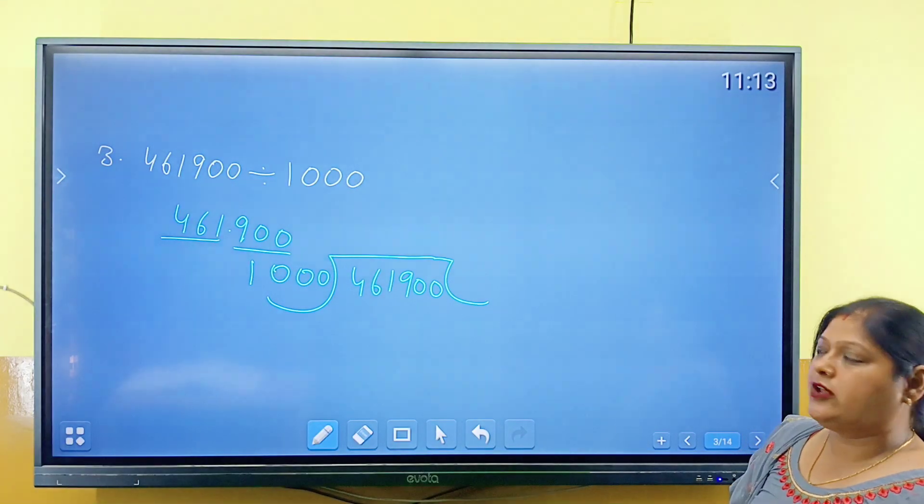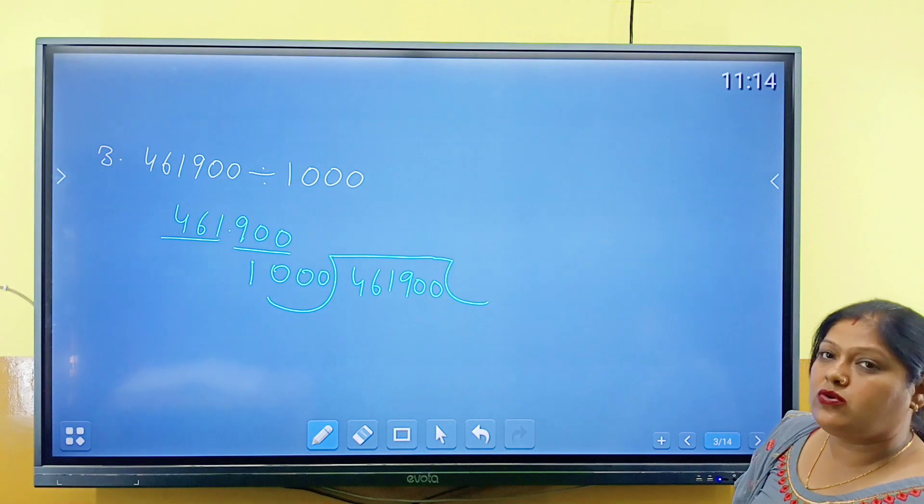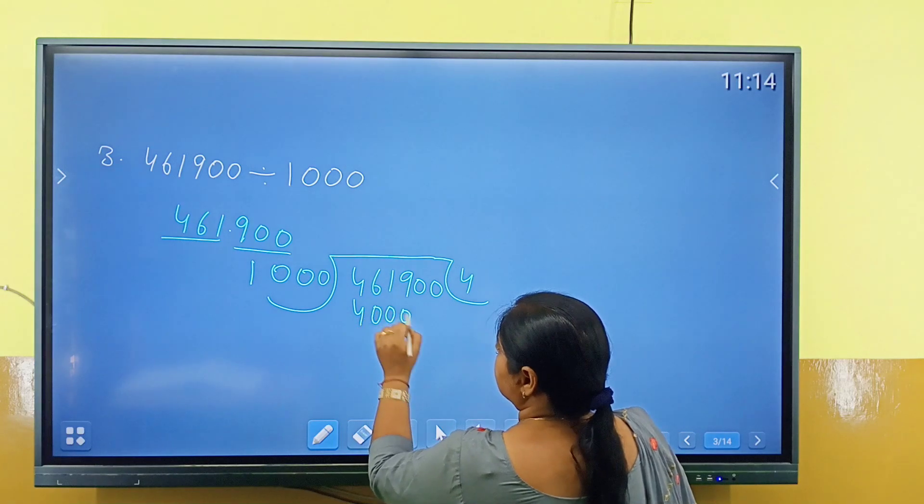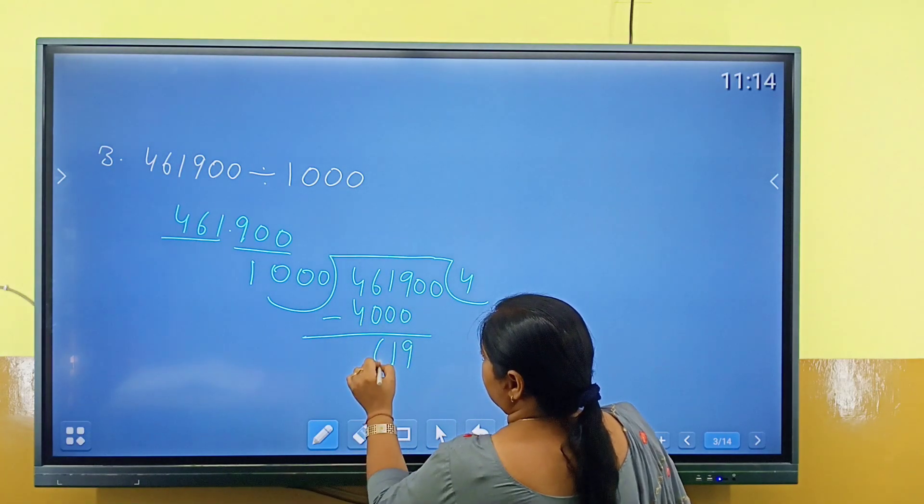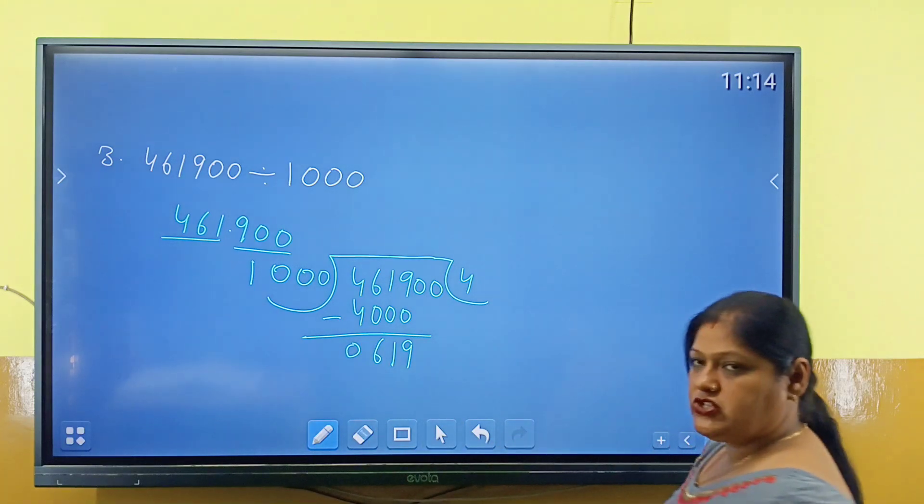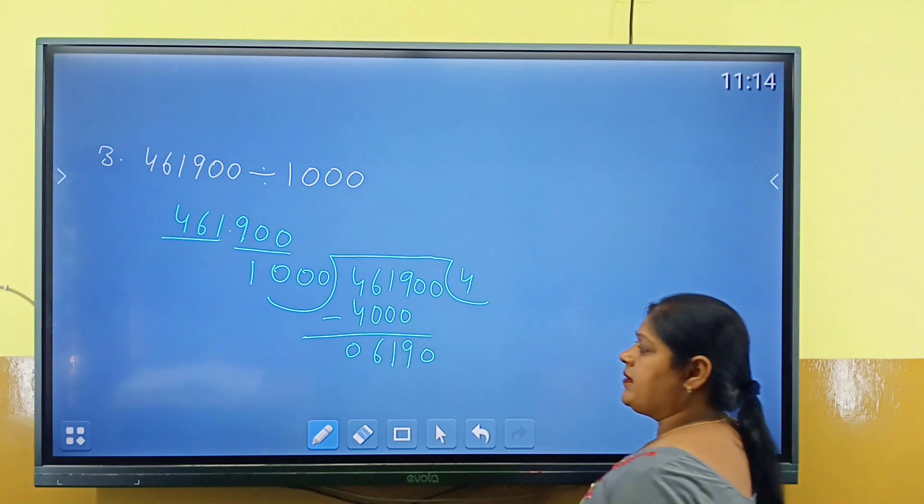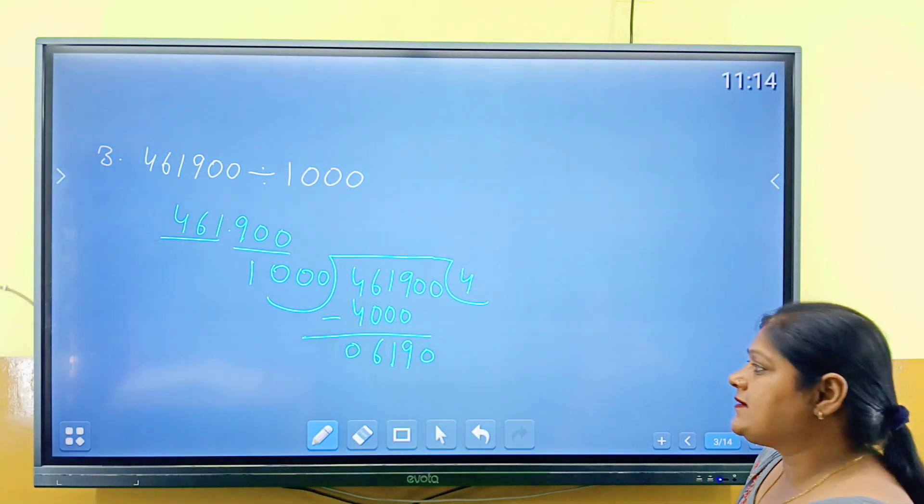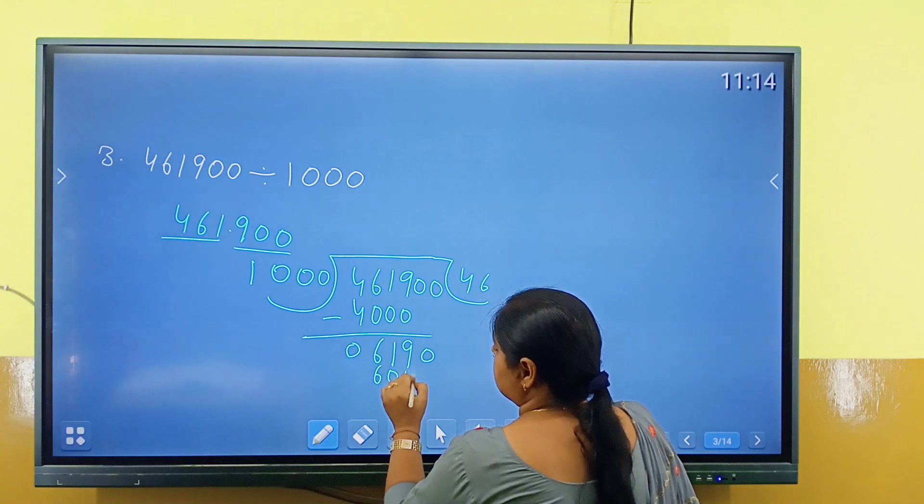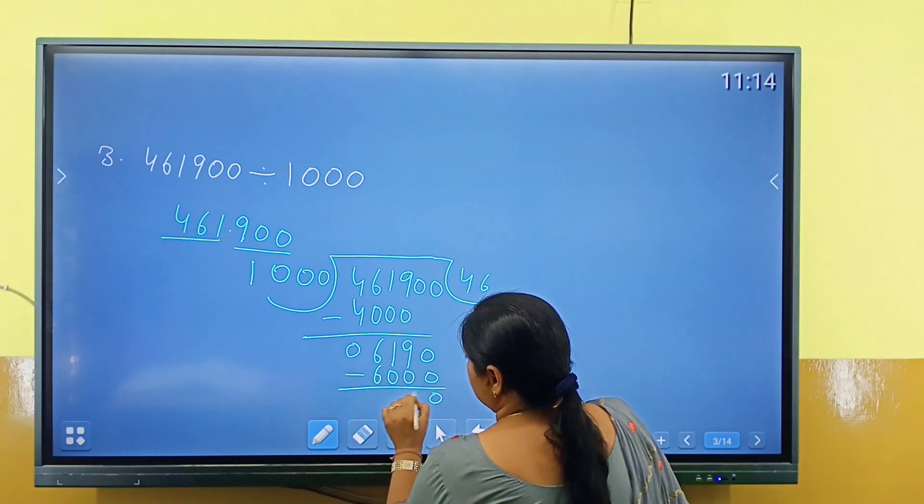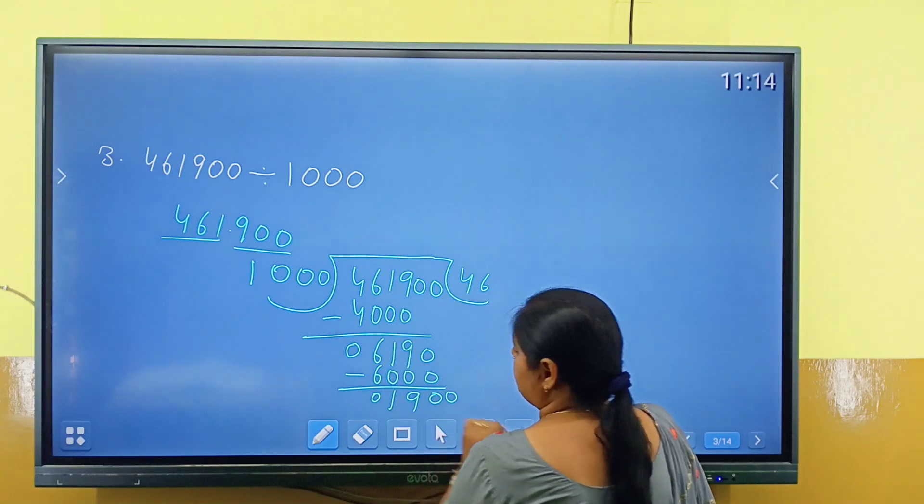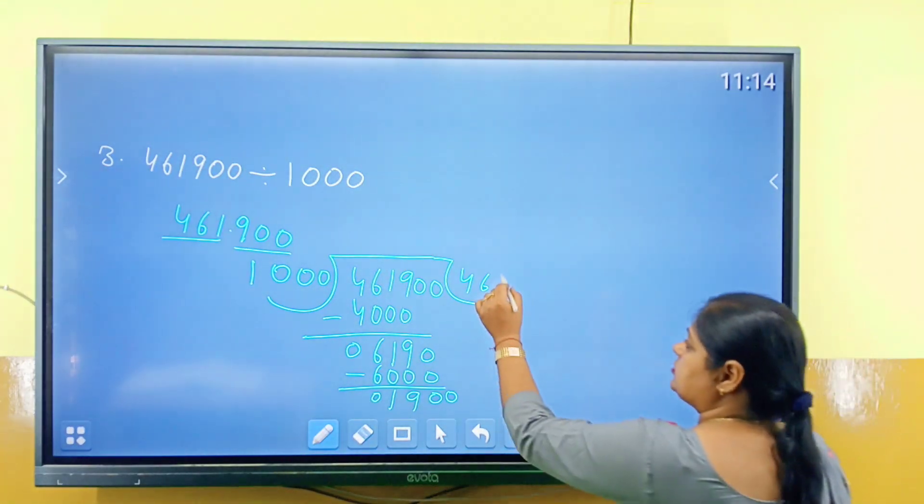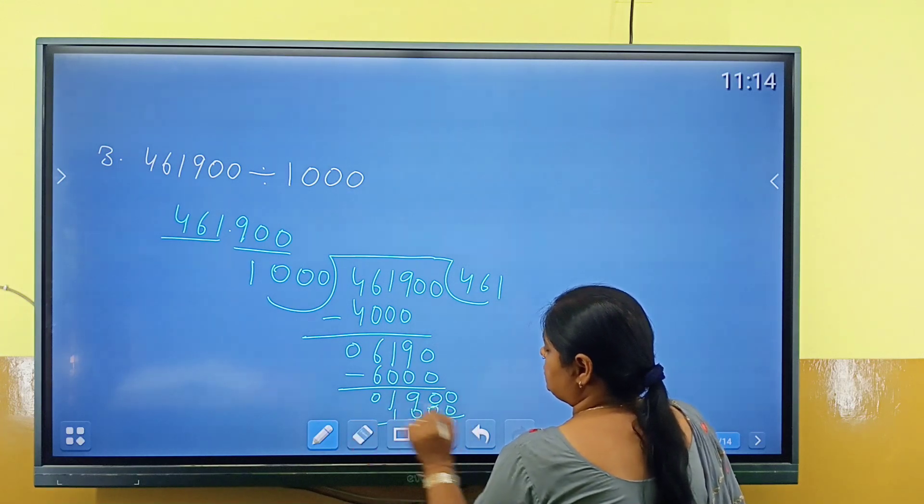For the student, we will have 461,900. So thousand, 4 thousand, subtract, what did we get? 600. And then, now we get zero to take it. Now what is the number? 6,190. So thousand, countable, 6 thousand, subtract, what did we get? Zero, 9, 1, 0. Now zero go, roll it down. Now thousand, countable, how do we get to read? 100 thousand, subtract, what did we get?